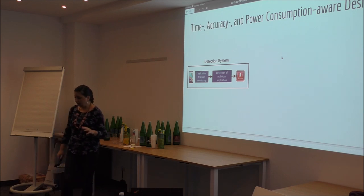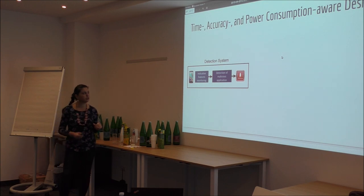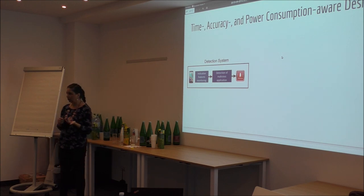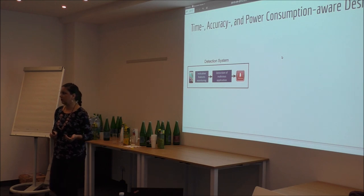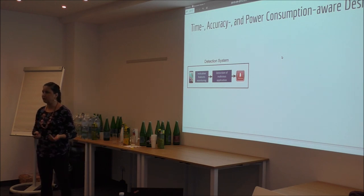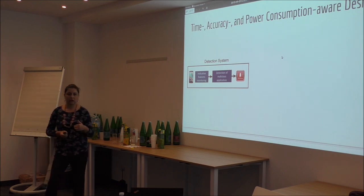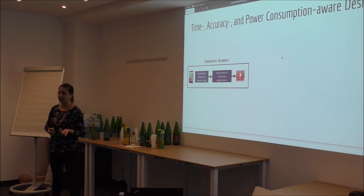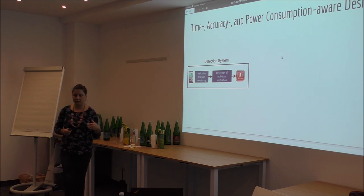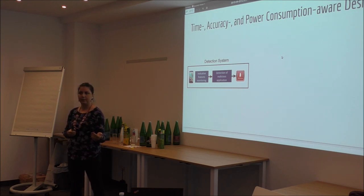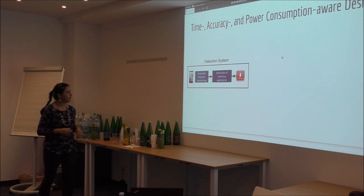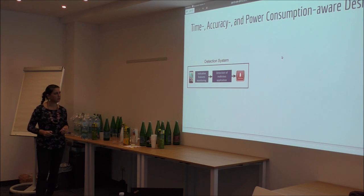How do we design this detection system? We take into account detection performance — the system still has to be good — plus power consumption, because it is an embedded/mobile device. At the same time we look into detection time: the time from when an application starts running on the phone until the system can say something malicious is happening. We evaluate detection results based on a specific set of detection parameters and look at detection accuracy, detection time, and power as objectives of interest.